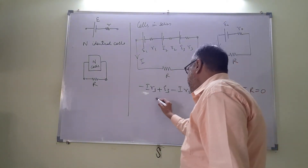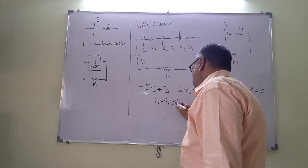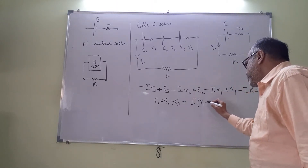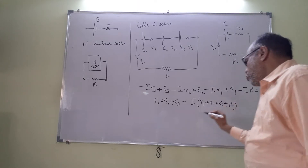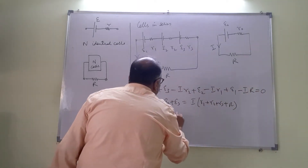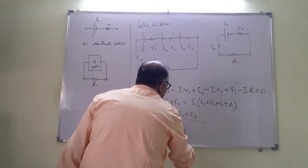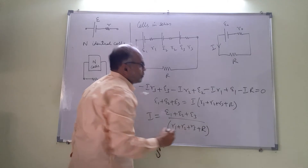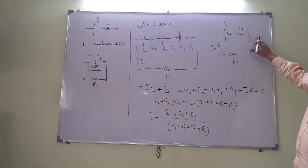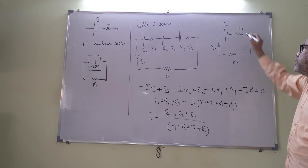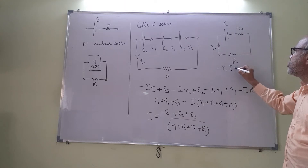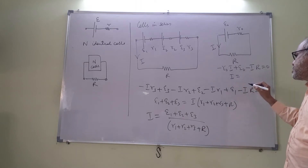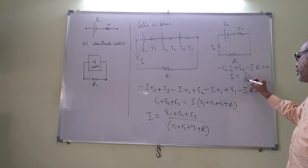Simplifying, E1 plus E2 plus E3 equals I times (R1 plus R2 plus R3 plus R), giving I equals (E1 plus E2 plus E3) divided by (R1 plus R2 plus R3 plus R). If I apply this to the equivalent circuit with E0 and R0, going around the loop gives I equals E0 divided by (R0 plus R).